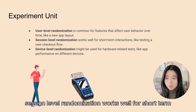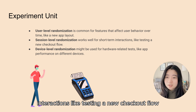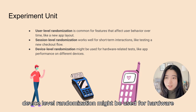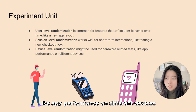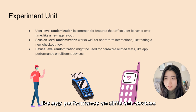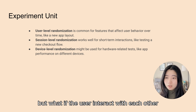Session-level randomization works well for short-term interactions like testing a new checkout flow. Device-level randomization might be used for hardware-related tests like app performance on different devices. But what if users interact with each other?